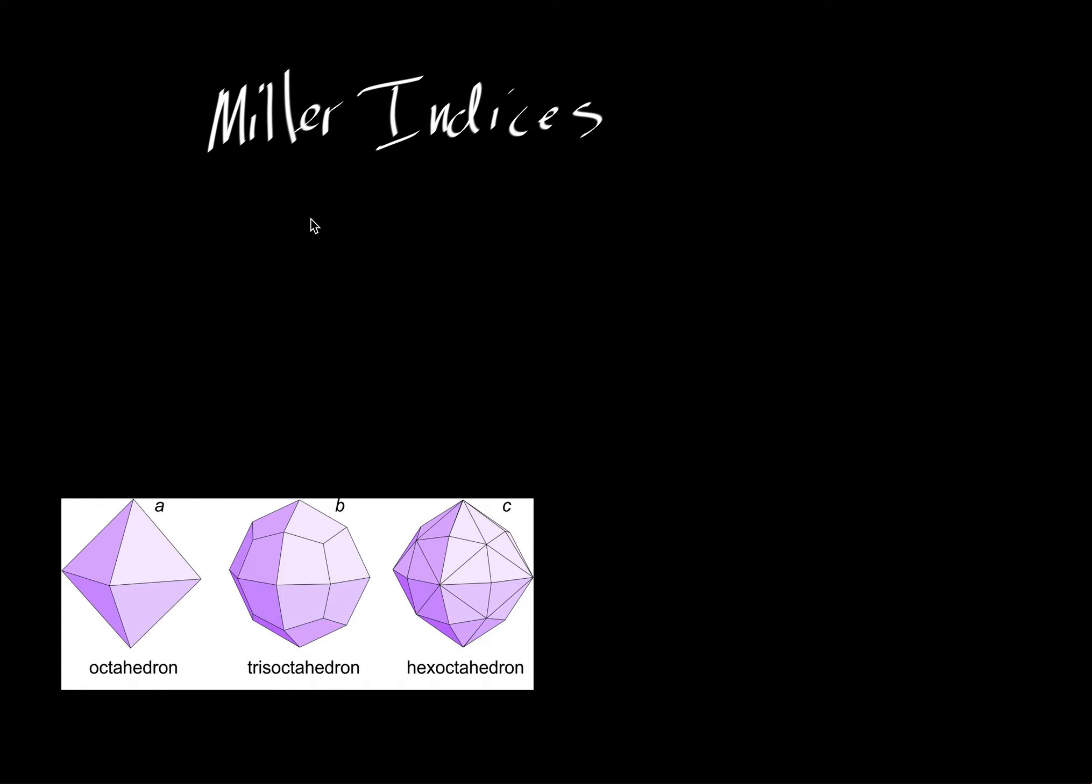We're going to look at Miller indices and we're going to start out using this very nice figure from Dexter Perkins where he's illustrated an octahedron and variations on the themes. We're going to use that octahedron as an example. Miller indices are a way of identifying faces on a particular crystal.